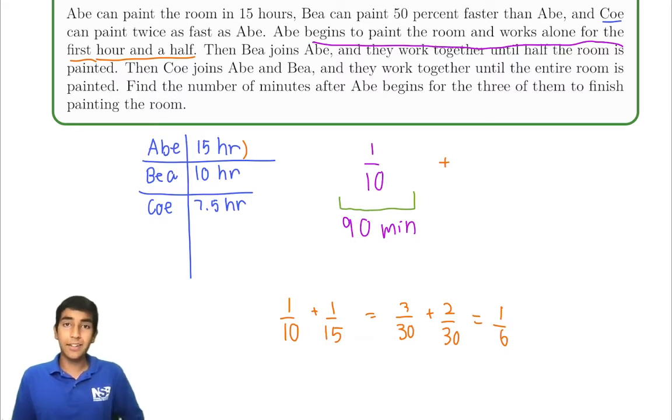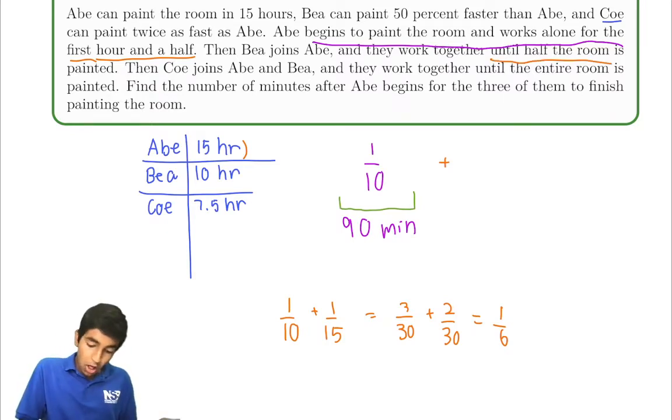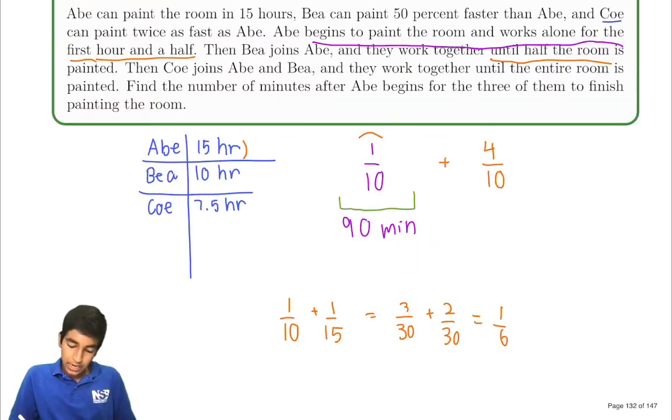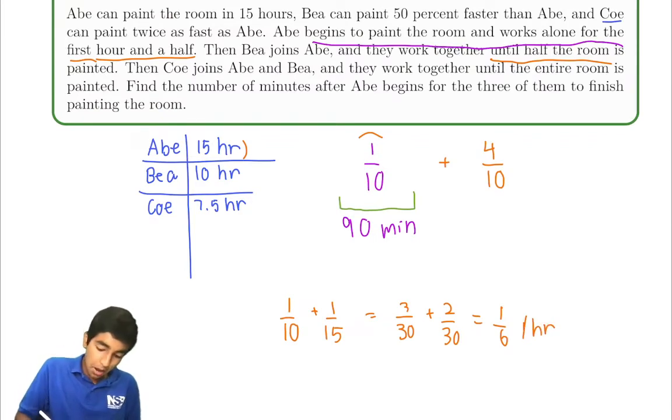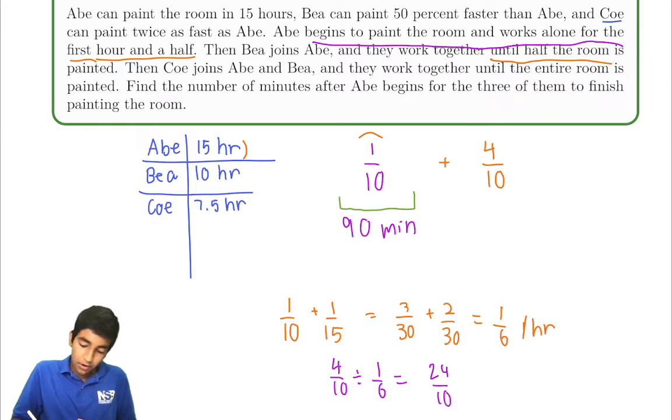They're not trying to paint a sixth of the room. They have to work together until half the room is painted. A tenth of the room is already painted, so now they need to paint 4 tenths more. So if they can paint this much per hour, how many hours will they need? 4 tenths divided by 1 sixth equals 4 tenths times 6, or 24 over 10. This is in hours. Let's convert it to minutes times 60: 144 minutes.